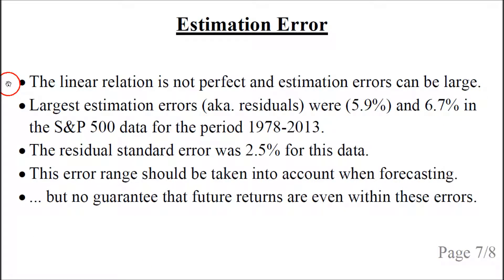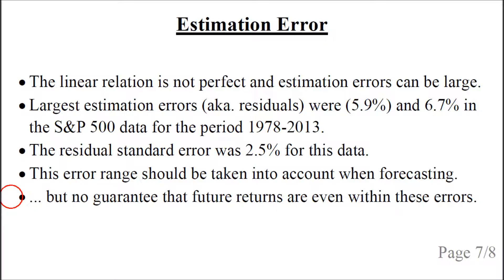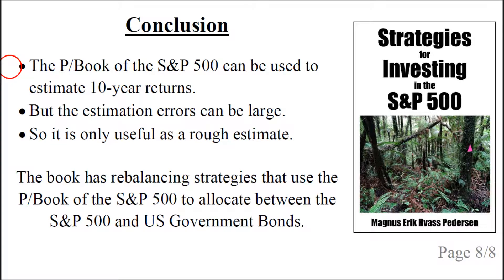We have seen that the linear relation is not a perfect fit and the estimation errors can be quite large. The largest estimation errors were minus 5.9 percentage points and 6.7 percentage points in the S&P data for the period 1978 to 2013. The residual standard error was 2.5% for this data, and this error range should be taken into account when forecasting future returns — though there is no guarantee that future returns will even fall within these errors. The conclusion is that the price-to-book ratio of the S&P 500 can be used to estimate its 10-year returns, but the estimation errors can be large, so it is only useful as a rough estimate.